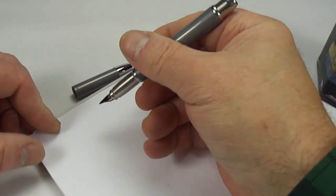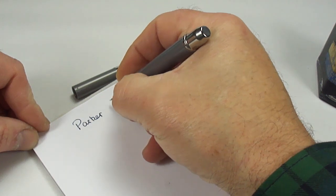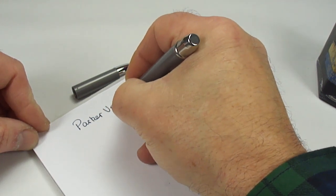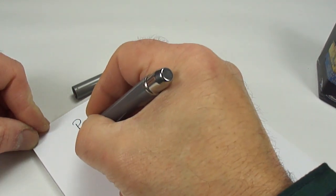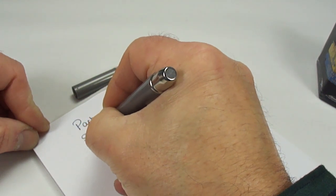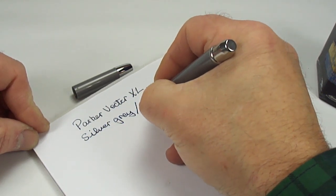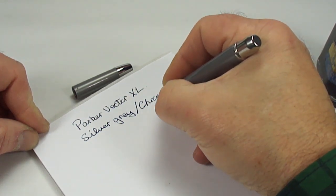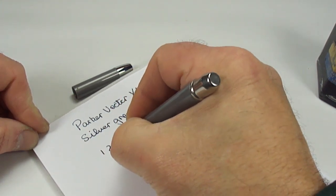So what we're going to do, we're just going to simply dip the nib in the ink and just do a writing sample. So we've got Parker Vector XL, and the color of this is what they term as a silver gray, as we said, with chrome trim.